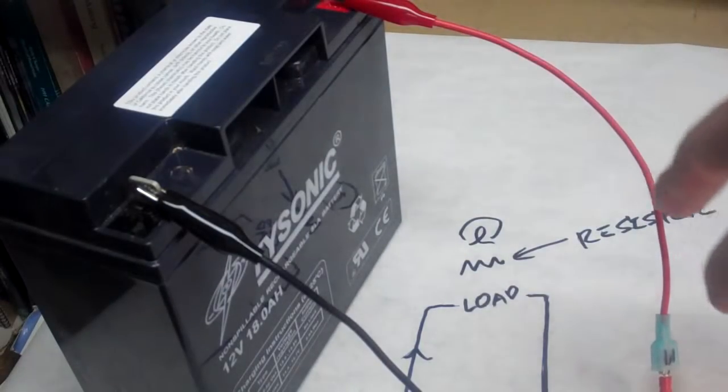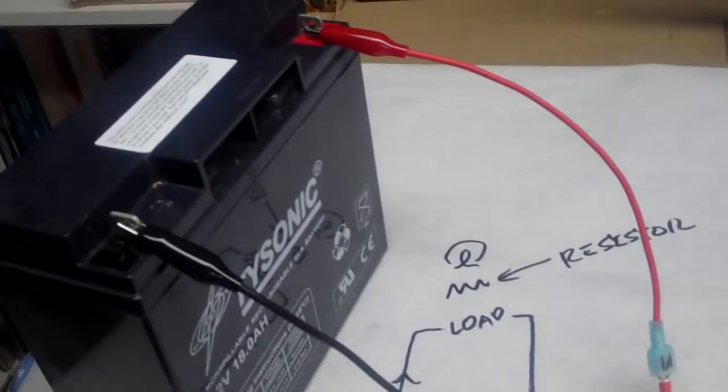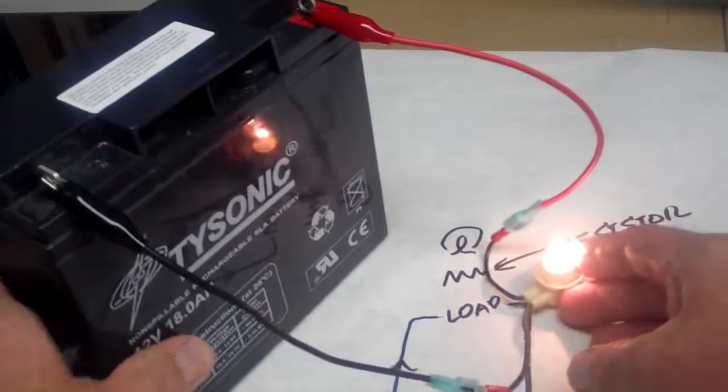We got current in, through the load, current out of the load, and back to the battery. Okay, that's our basic circuit.